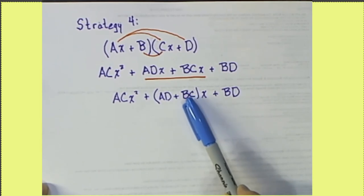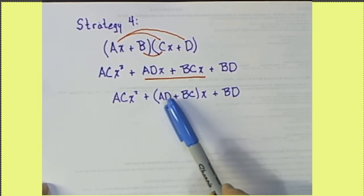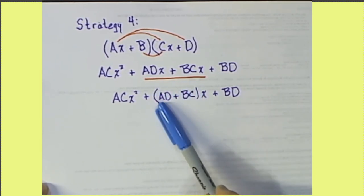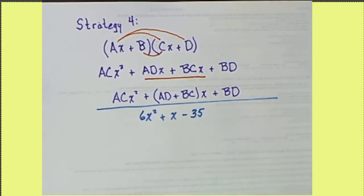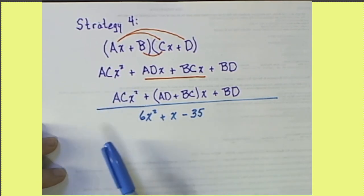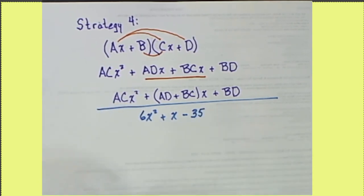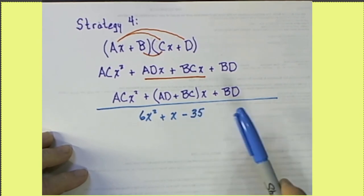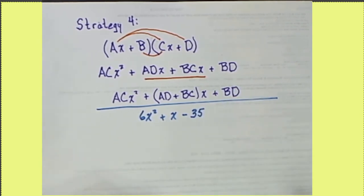And A, B, C, and D are all factors that end up in here as well. As an example, we'll factor 6x squared plus x minus 35. We know that this 6 is going to be made up of an A times a C and that this 35 is going to be a B times a D.